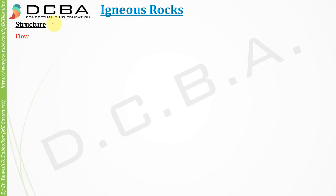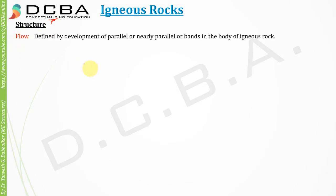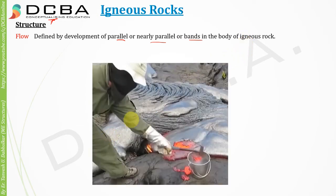Next is structural classification. The first type is flow structure. It is defined by the development of parallel or nearly parallel bands in the body of the igneous rock. You can see lava getting cooled down with folds that are nearly parallel to each other. When they cool down, they retain this structure, which is called a flow structure.